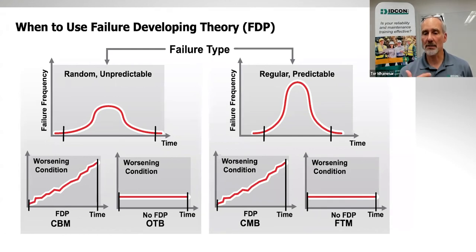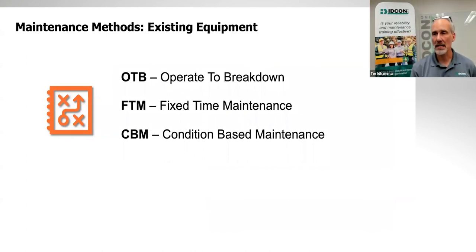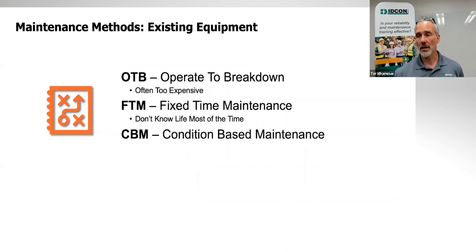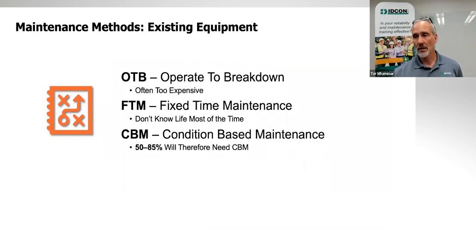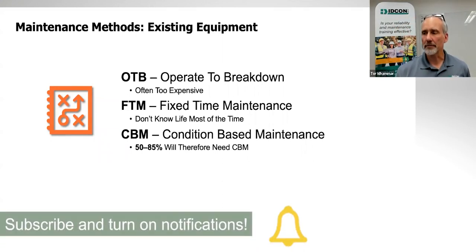This is conceptually how we need to think about it when setting up our PMs — fundamental knowledge we need clear in our heads before documenting and setting up tasks. The questions to ask are: can it operate to breakdown? If breaking down stops the plant, it's too expensive. Don't know the life? You're left with condition-based maintenance. Process plants run about 80–85% condition monitoring; other plants may be closer to 50%, depending on the equipment.